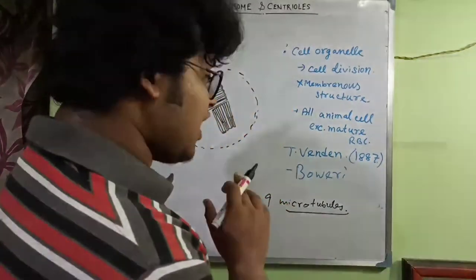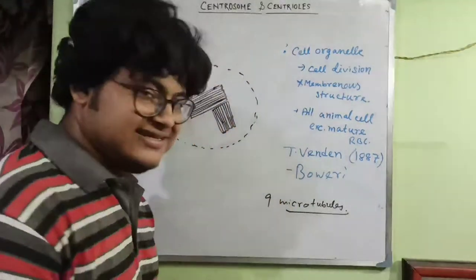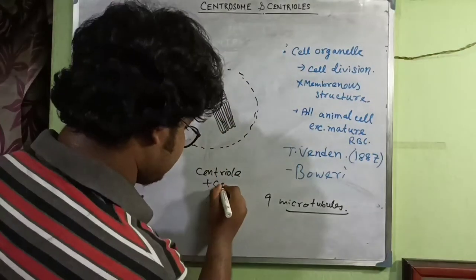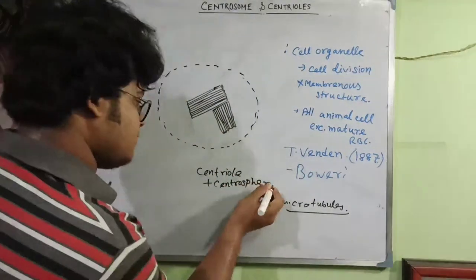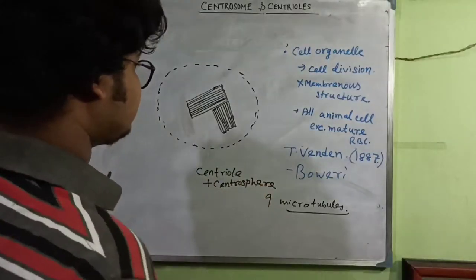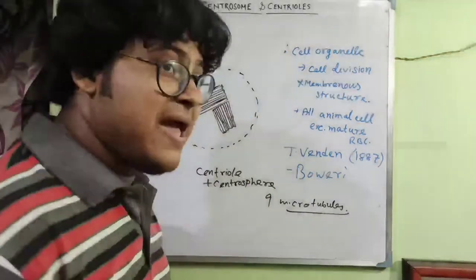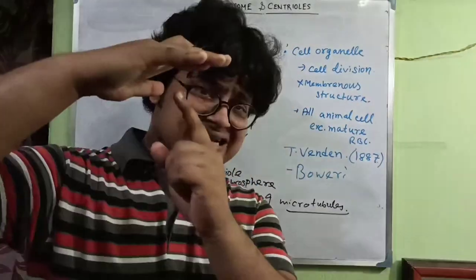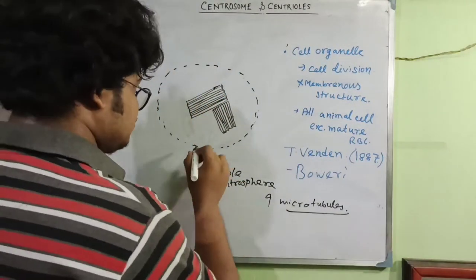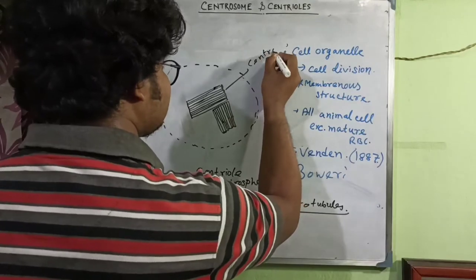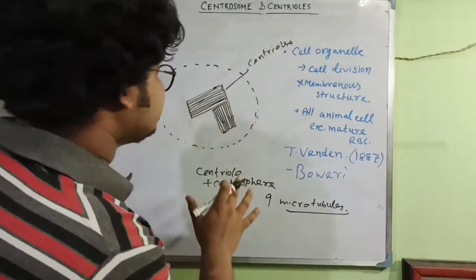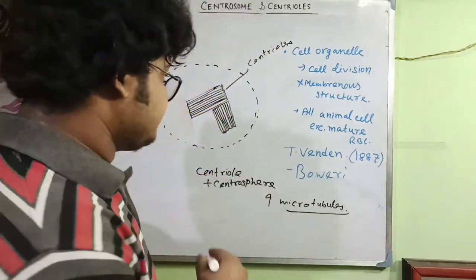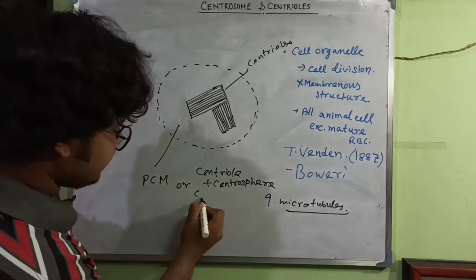The centrosome is a cell organelle consisting of centrioles plus centrosphere. Each centriole is a barrel-shaped structure, and the two centrioles are oriented at a 90-degree angle to each other. The region surrounding the centrioles is known as the centrosphere or pericentriolar matrix.